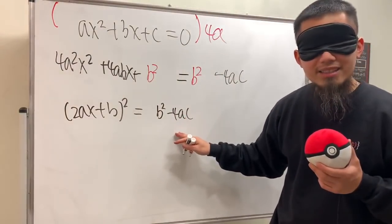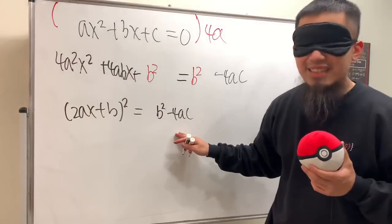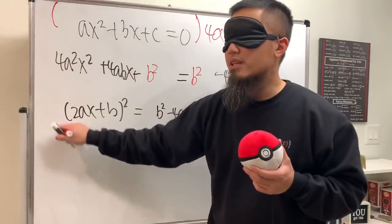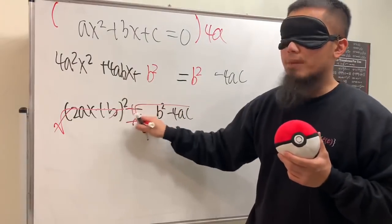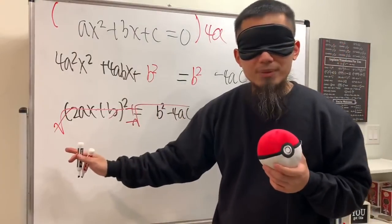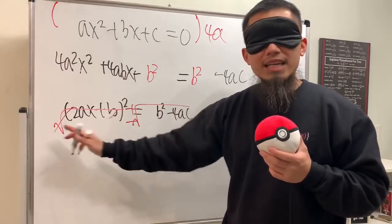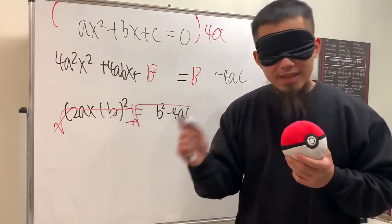Right, now of course we can just take the square root on both sides, and then don't forget the plus or minus. And ladies and gentlemen, we are just going to move the b to the right hand side and divide both sides by 2a.